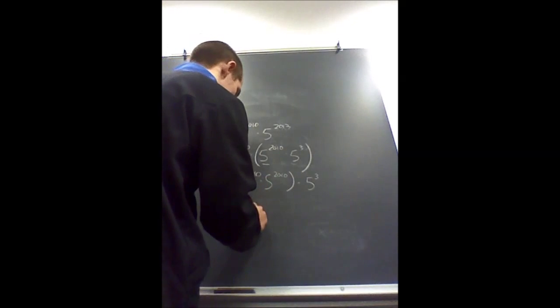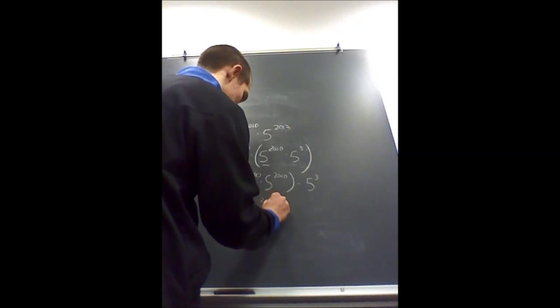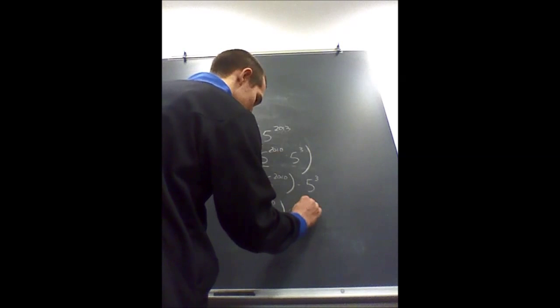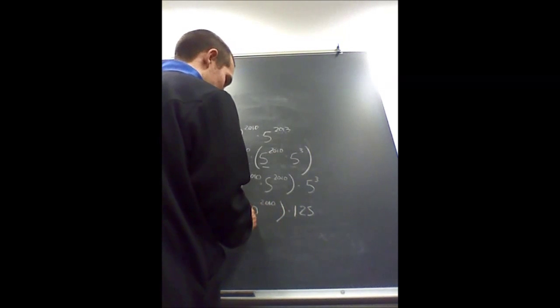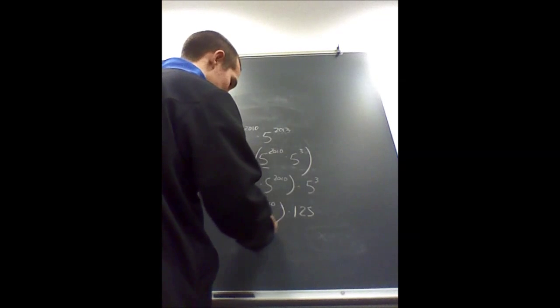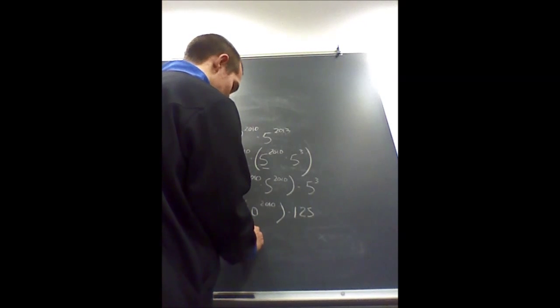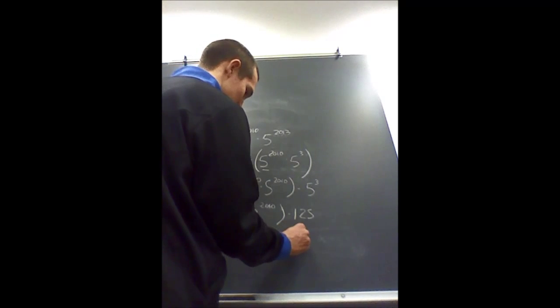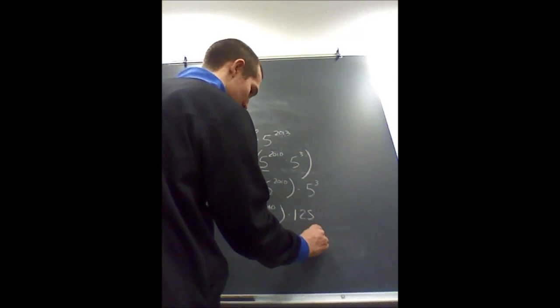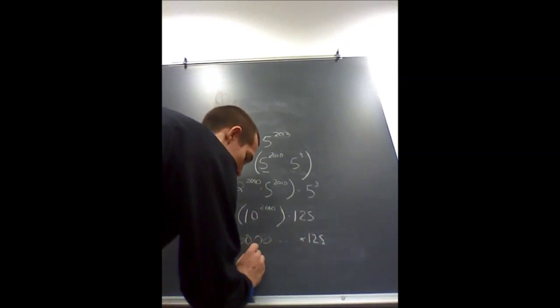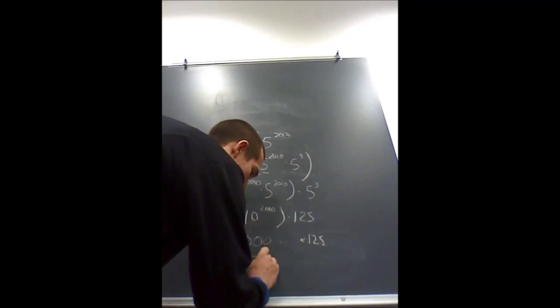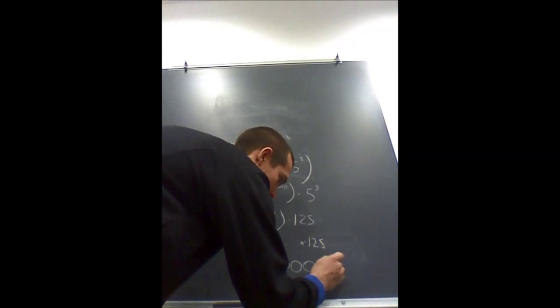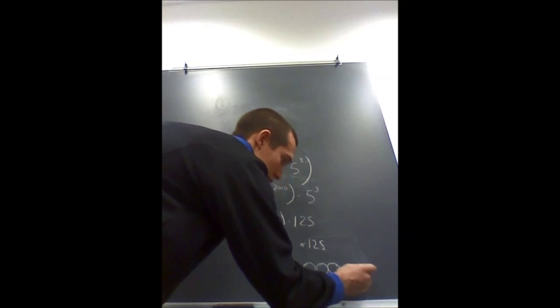This is going to be 10 to the 2010 times 125. Now this is going to be 1 followed by a lot of 0s times 125. So that whole number turns into 125 with a lot of 0s and only 0s the rest of the way.